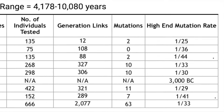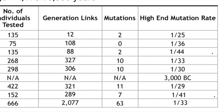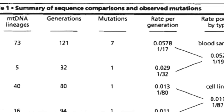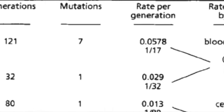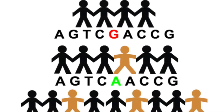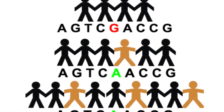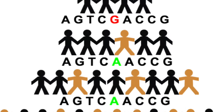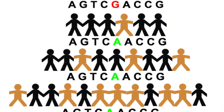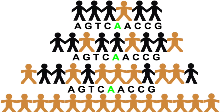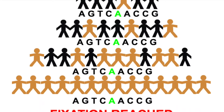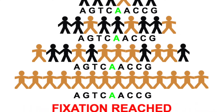These studies show us that most substitutions arise anywhere between around 17 and 40 generations. This means that there is a new substitution that arises within that time frame and then begins to work its way through the population until it reaches fixation.